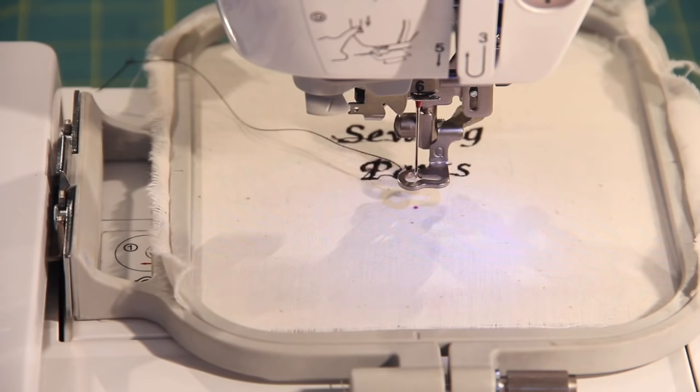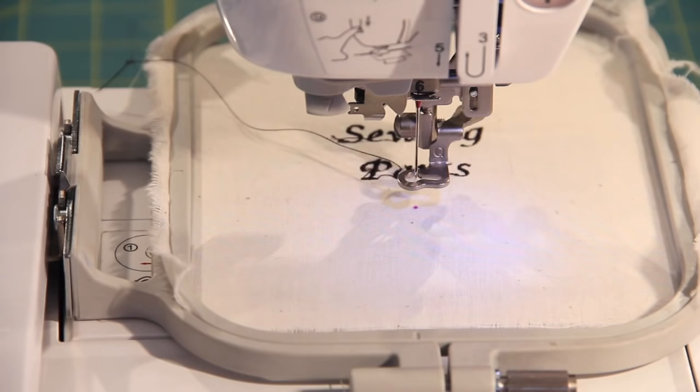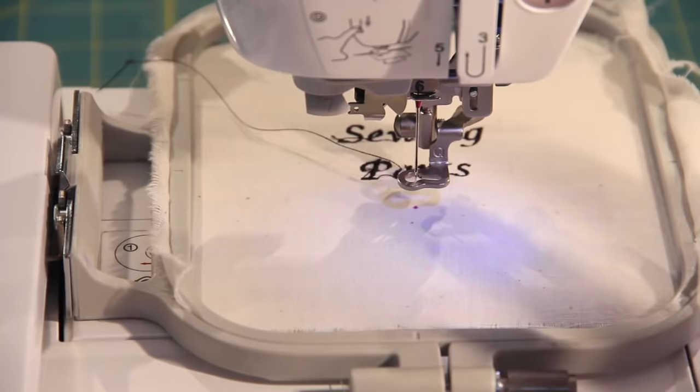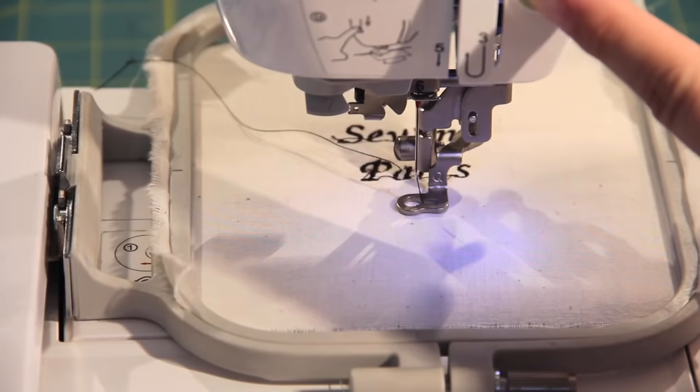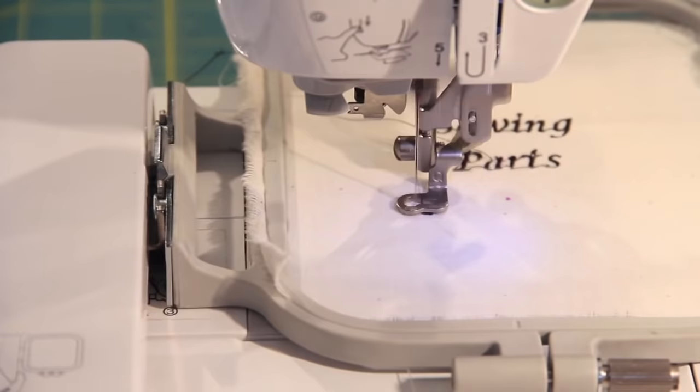So now that we have our embroidery unit in and we have our frame in, we have our embroidery needle, embroidery thread. And you can select on your machine what you want to say. I'm going to write sewing parts online. And then all you have to do from here out after you've customized it on there is just press the go button. Now once it starts, you just let it do its thing. And this is on just regular muslin fabric just for demonstration purposes.